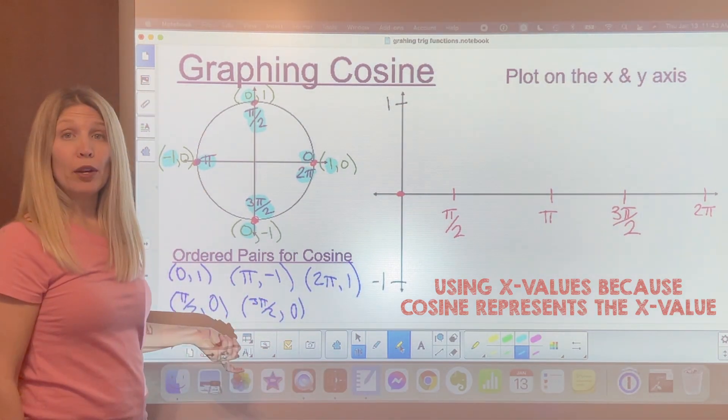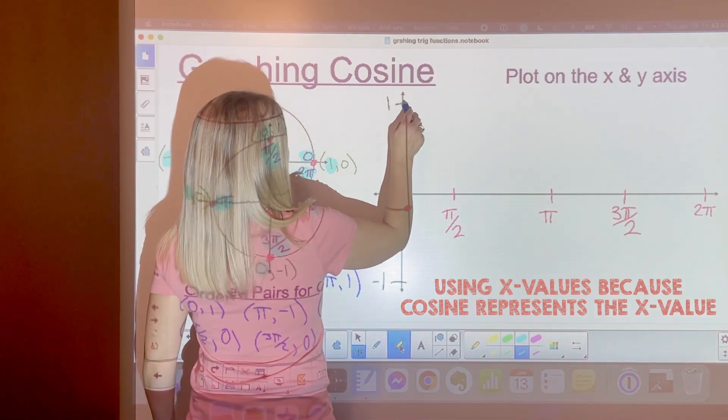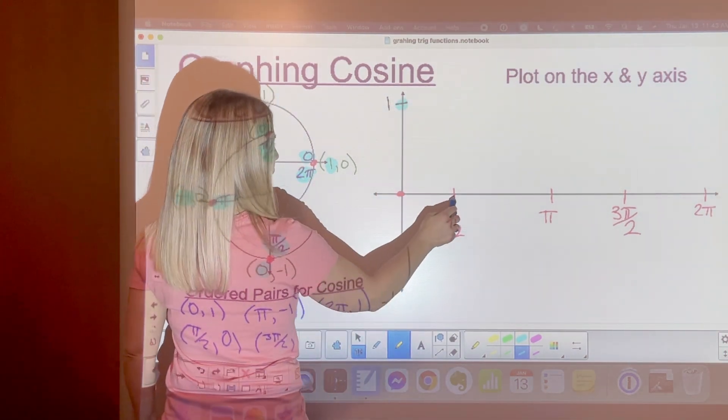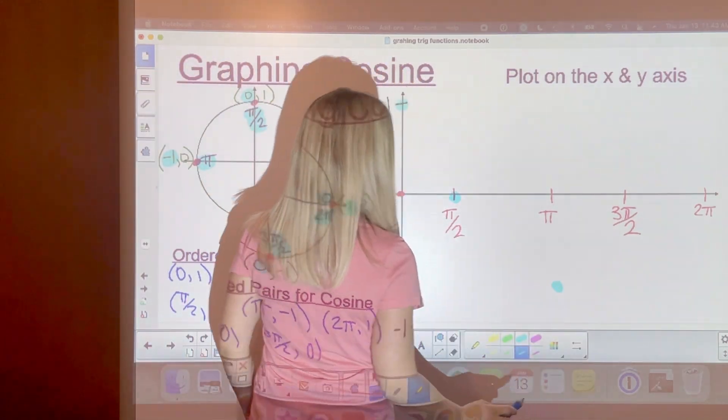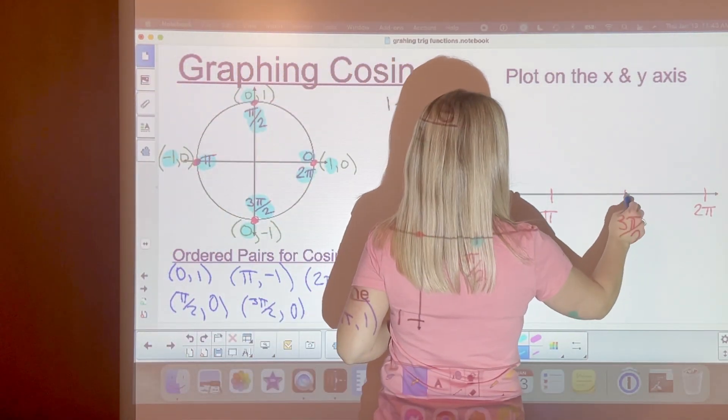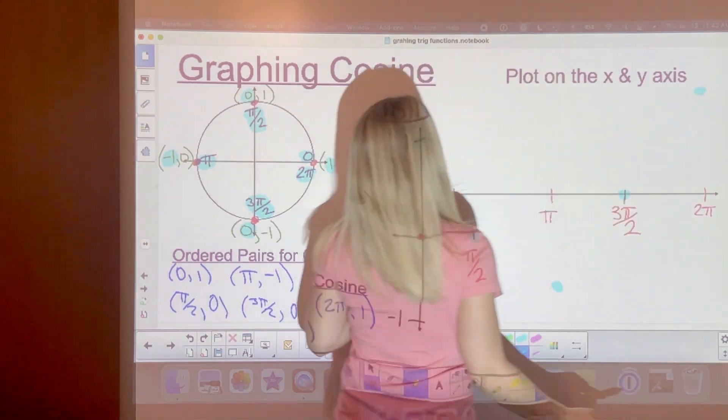Now I'm going to take the ordered pairs and we're going to plot them on our x y axis. So 0, 1. Pi over 2, 0. Pi is down here at negative 1. And 3 pi over 2 is at 0. And 2 pi is at 1 again. And again, because we're taking this from a circle, our lines are going to be curved.